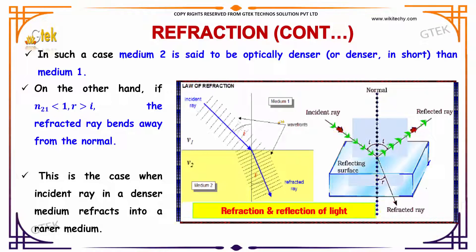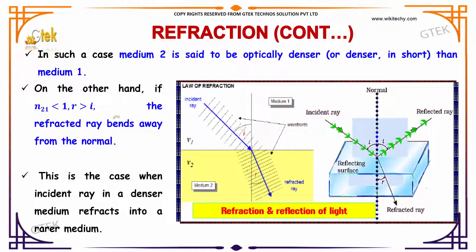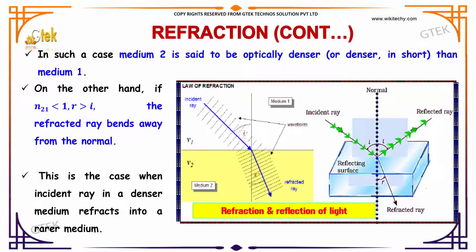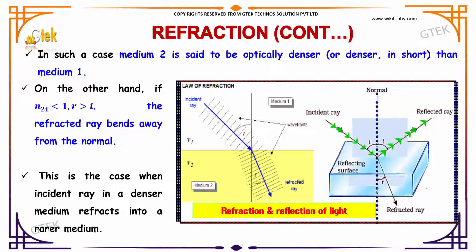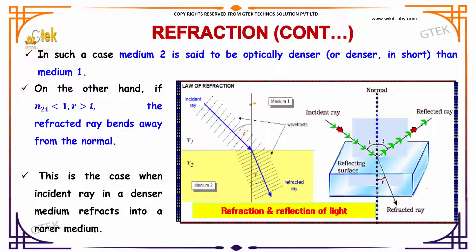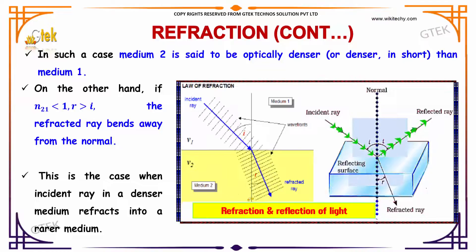On the other hand, if n21 is less than 1 and r greater than i, then the refracted ray bends away from the normal. This is the case when an incident ray in a denser medium refracts into a rarer medium.